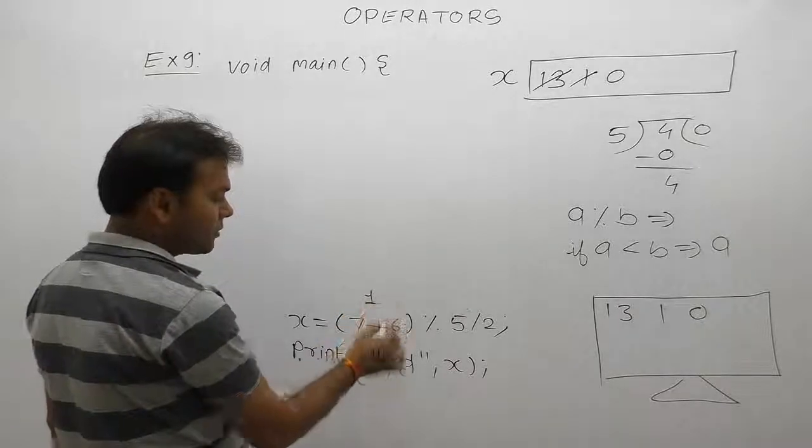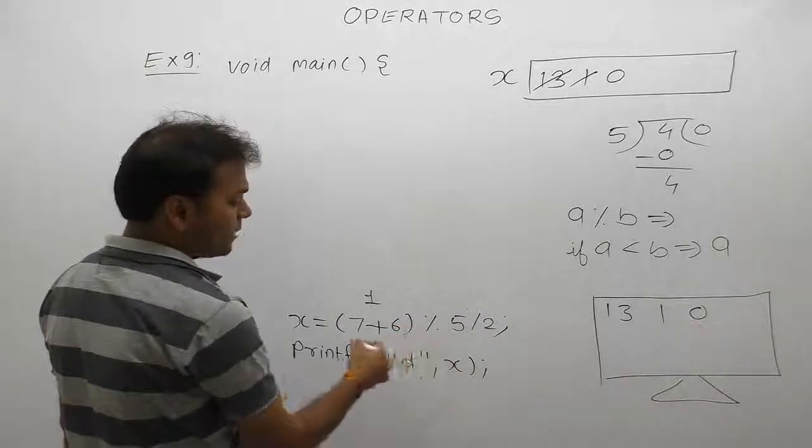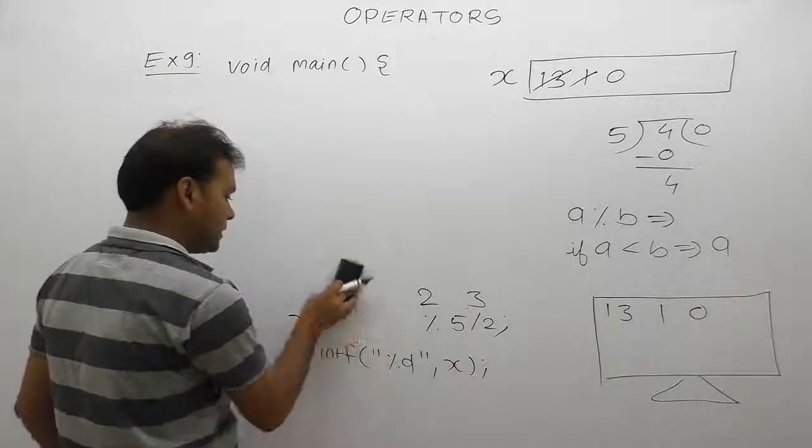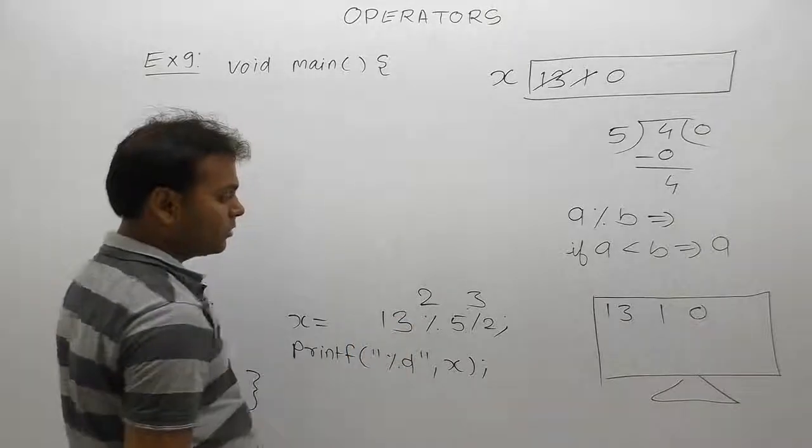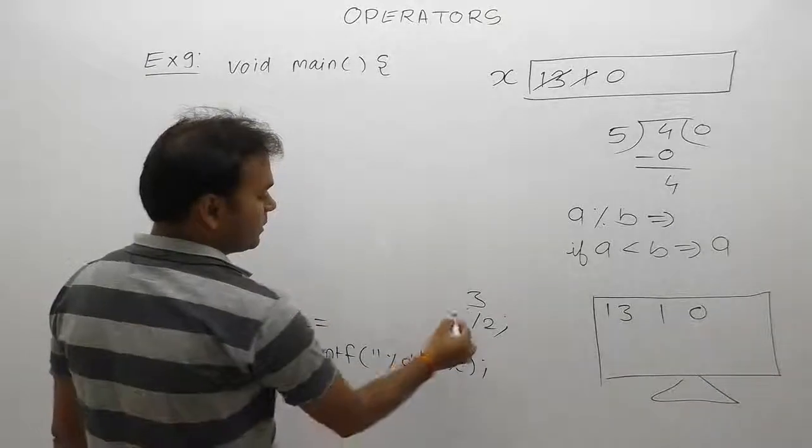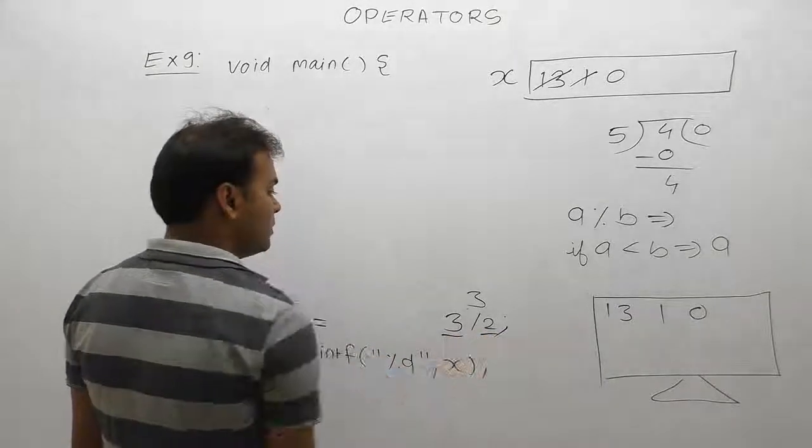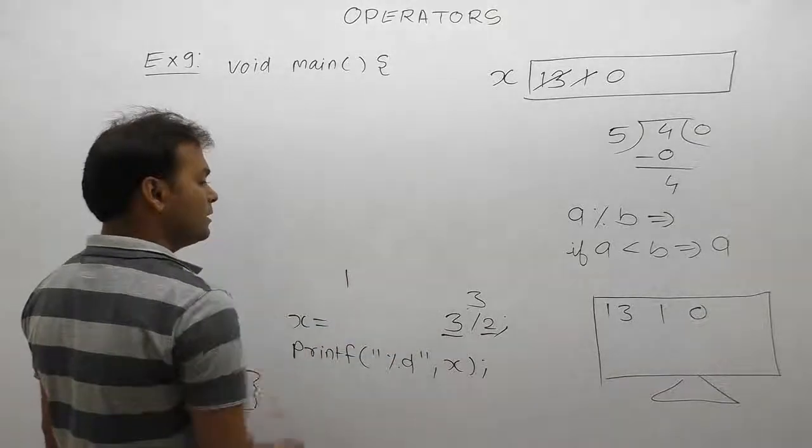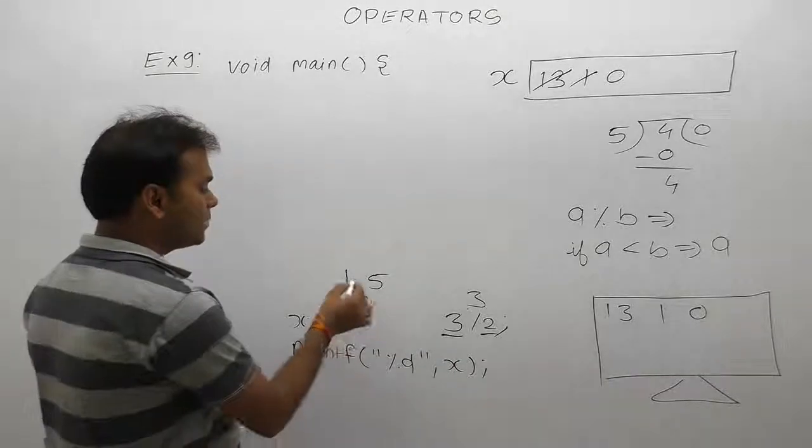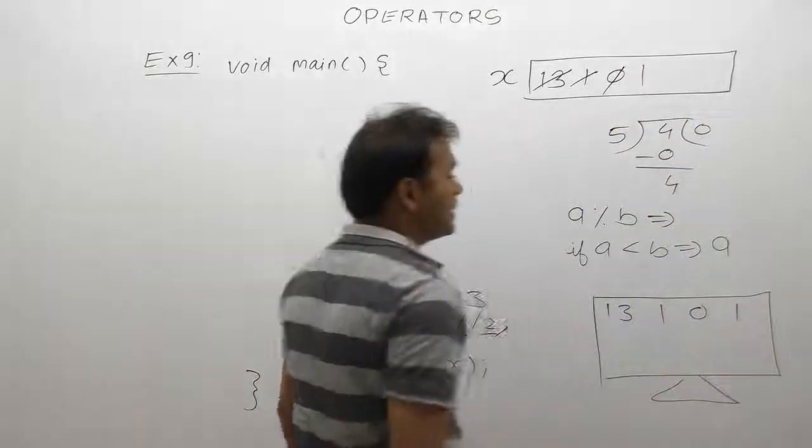Fourth expression. In this case, highest priority is addition, so first perform addition: 7 plus 6 becomes 13. Then modulo: 13 modulo by 5, remainder is 3. Then 3 divided by 2. First operand is integer, second is also integer, therefore result is integer. The integer part is only 1. 1 is assigned to x, therefore value of x is printed as 1.